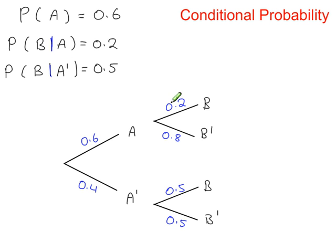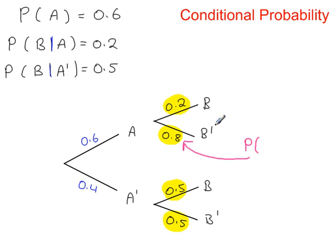The conditional probabilities in this tree diagram are all highlighted here — these are all conditional probabilities. For example, this one here represents the probability that event B' happens given that A has already happened, and that's equal to 0.8.